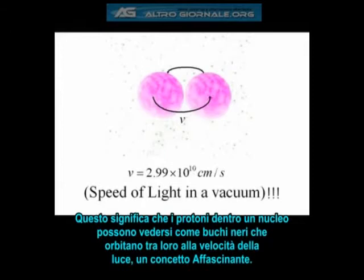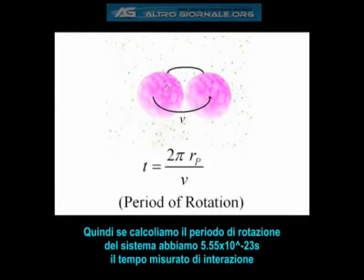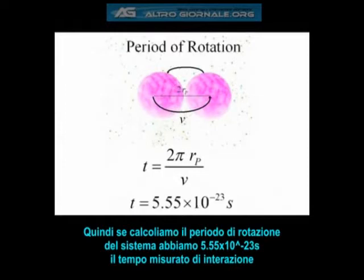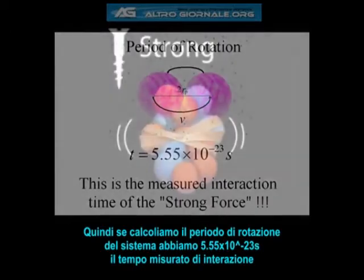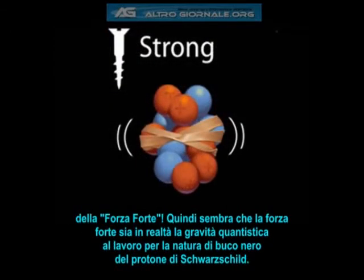This essentially means that the protons inside a nucleus can be thought of as black holes orbiting each other at the speed of light — a fascinating concept. If we then calculate the period of rotation of this system, we get 5.55 times 10 to the negative 23 seconds, which also happens to be the characteristic interaction time of the strong nuclear force.